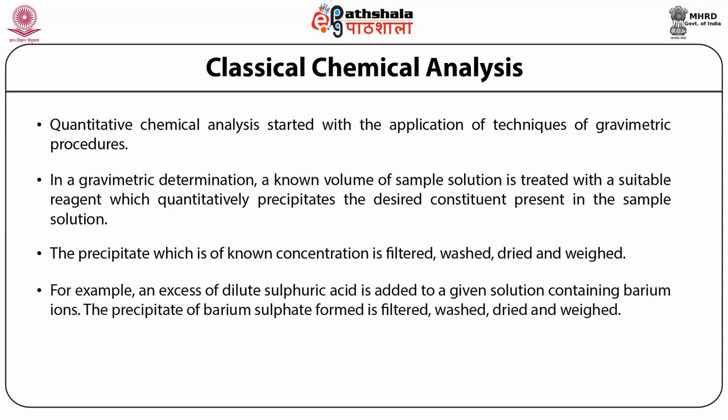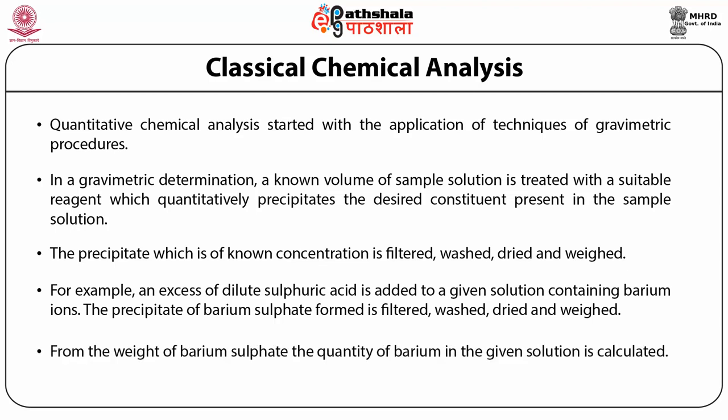Knowing the weight of the precipitate, the amount of the desired constituent in the test solution is calculated. For example, an excess of dilute sulfuric acid is added to a given solution containing barium ions. The precipitate of barium sulphate is filtered, washed, dried, and weighed. From the weight of the barium sulphate, the quantity of barium in the given solution is calculated. Because these determinations are based on the measurement of weight, they are referred to as gravimetric determinations.